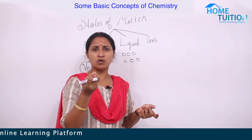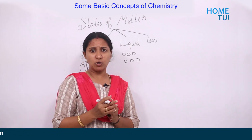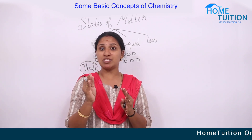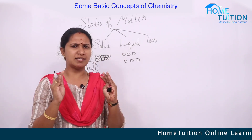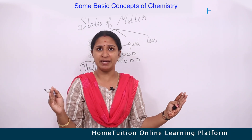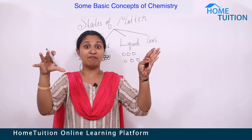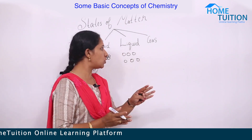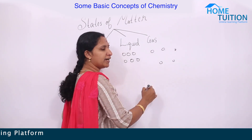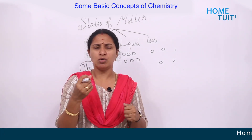In the gaseous state — oxygen that we breathe, carbon dioxide that we exhale — gases diffuse very fast. Diffusion means the intermixing of different matter. Gases spread very fast; if we open a perfume, the smell spreads everywhere easily. In the gaseous state the particles are very loosely bounded, so they exert pressure wherever they are kept.